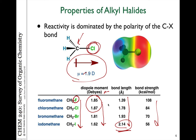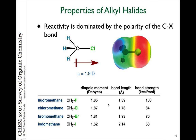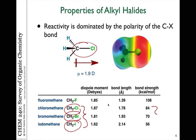Take-home message: the longer the bond, the weaker it is, and the weaker the bond is, the more reactive it's going to be. So when we talk about reactions that break a carbon-halogen bond, the weaker the bond, the more reactive it will be. Iodo compounds are going to be more reactive than bromo compounds and chloro compounds. These three halogens are most commonly used for reactions because those bonds are weak enough to break under various reaction conditions.